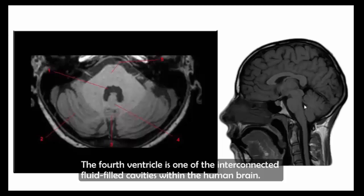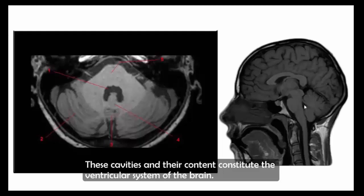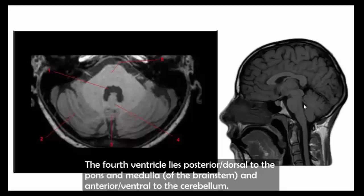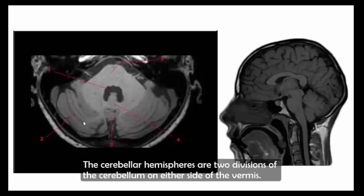The fourth ventricle is one of the interconnected fluid-filled cavities within the human brain. These cavities and their content constitute the ventricular system of the brain. The fourth ventricle lies posterior to the pons and medulla, anterior to the cerebellum. This is the cerebellar hemisphere — the two divisions of the cerebellum on either side of the vermis.